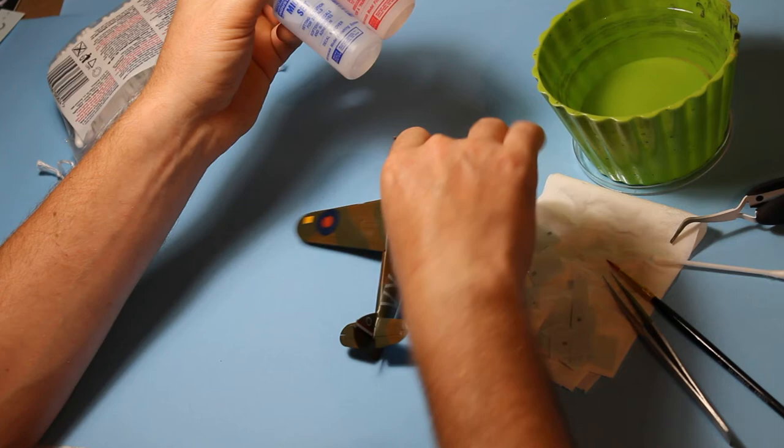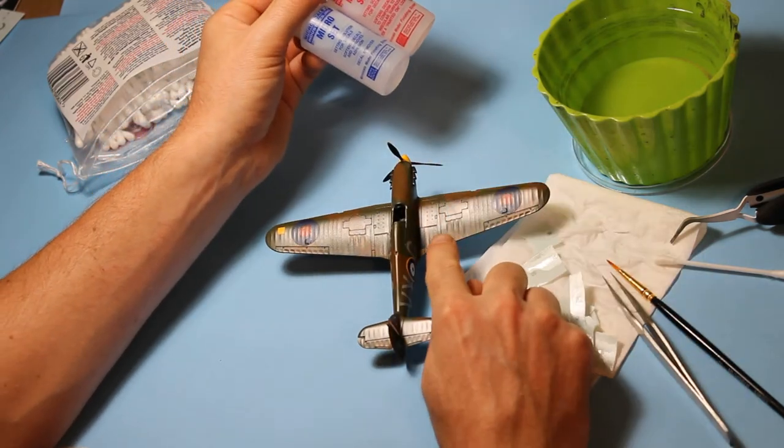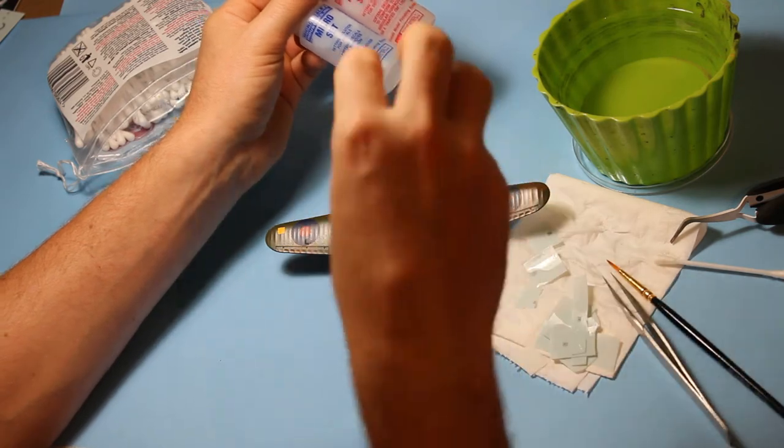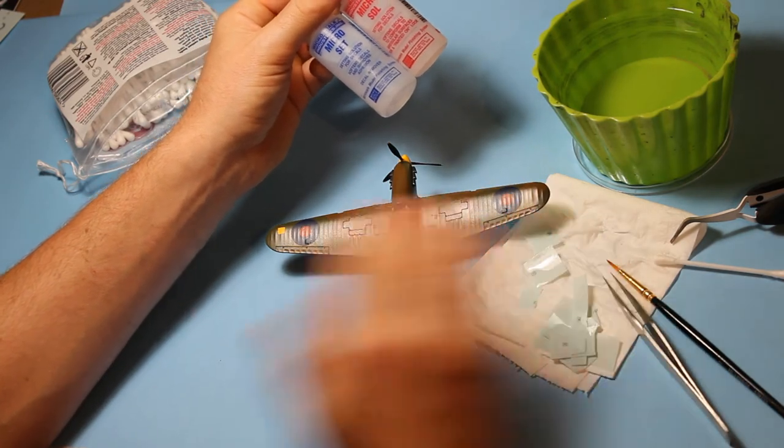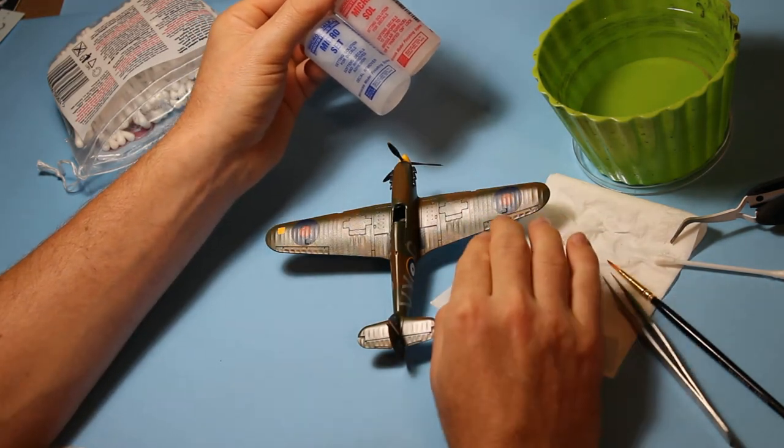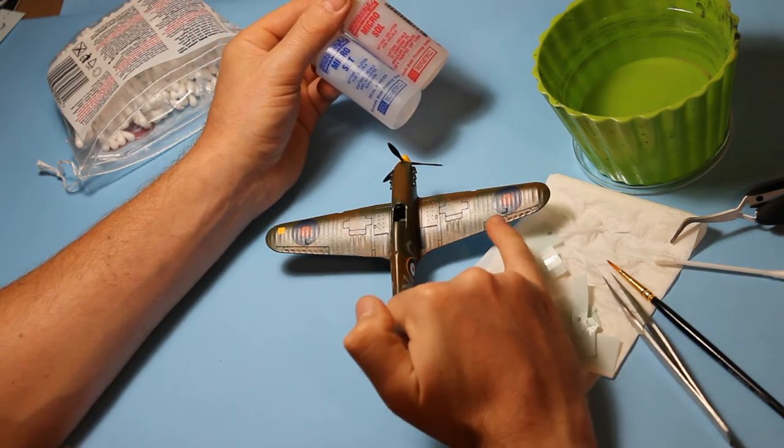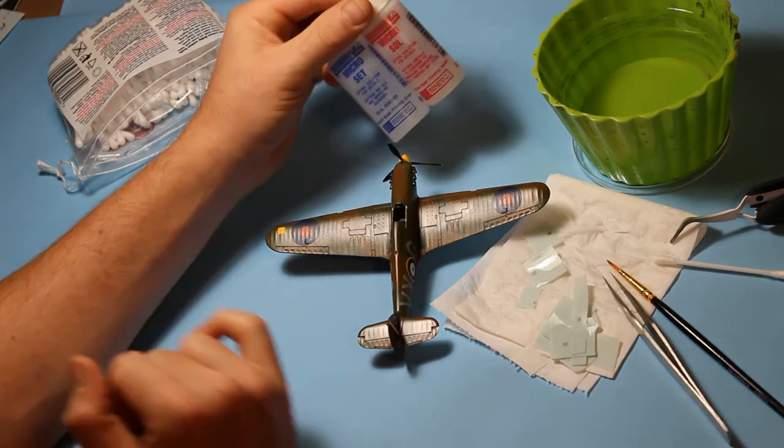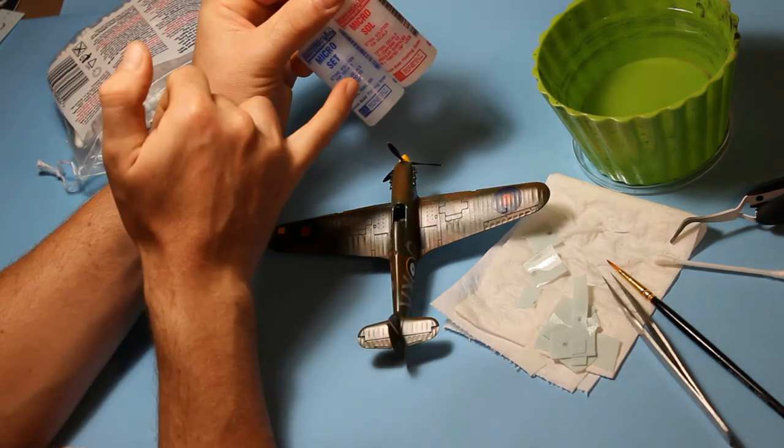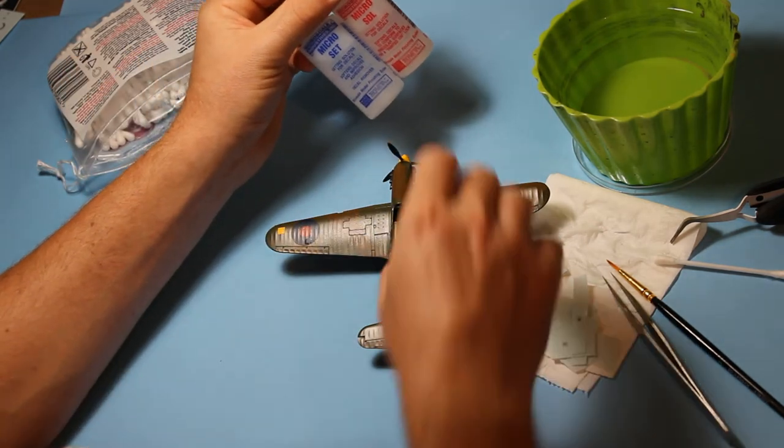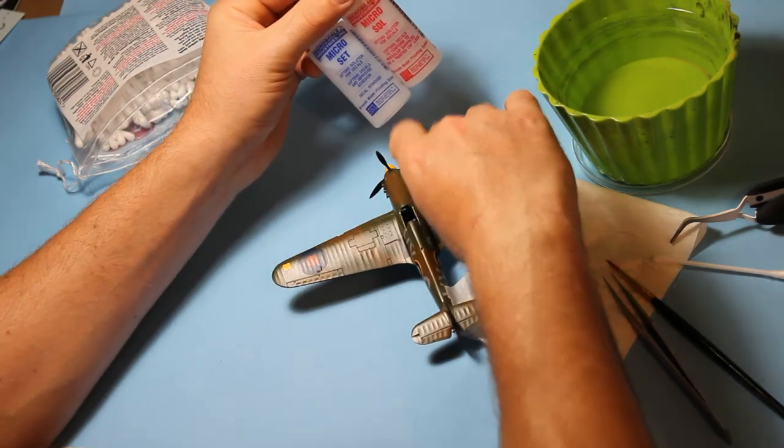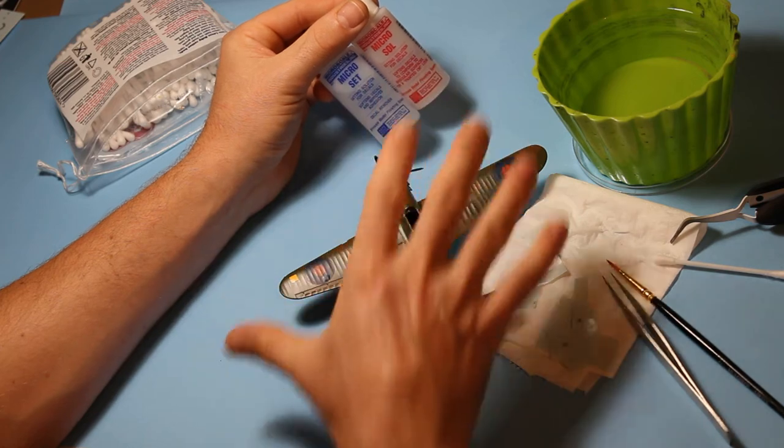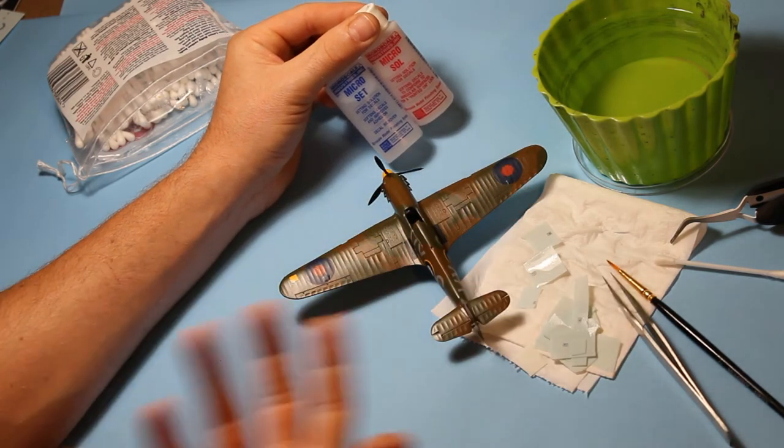All of the panel lines, all of the ridges, the Hurricane's got quite a good fabric detail. So there's lots of ridges. Really helps the decals sink in and eat into that. Especially with these roundels there's a square panel which is coming through them quite nicely. So far I've applied micro-set to all of these. We're working on the larger decals at the minute, which is what I like to do. And everything on the top side. And then we'll go on to the underside.